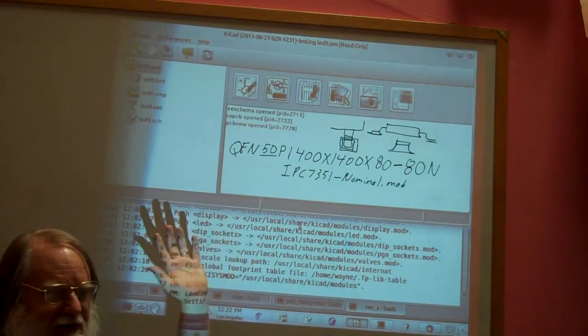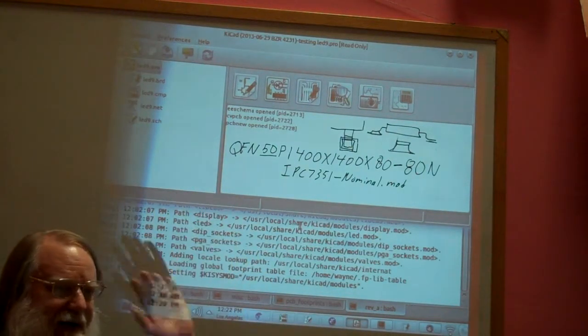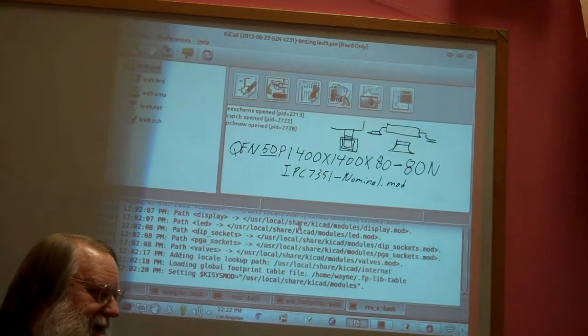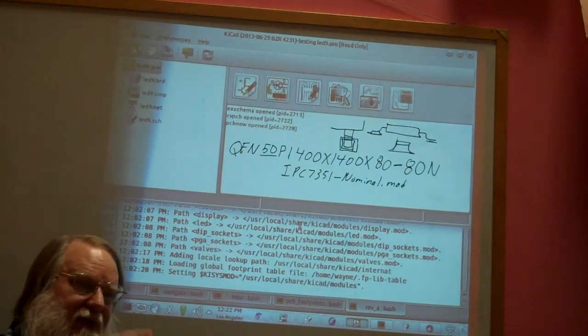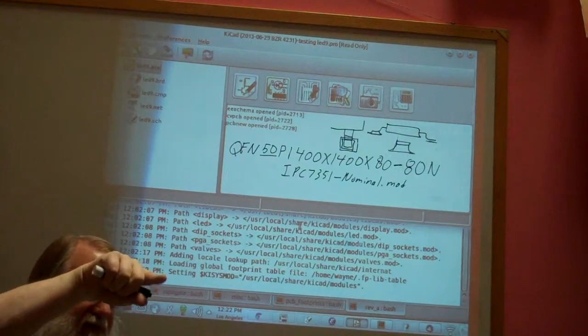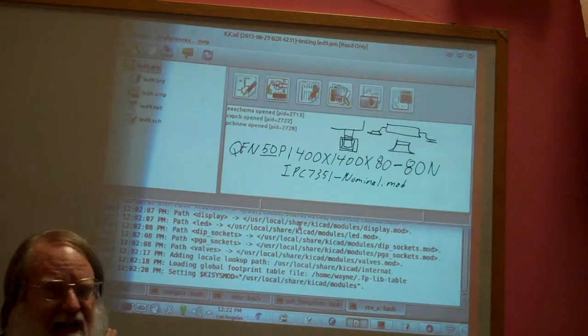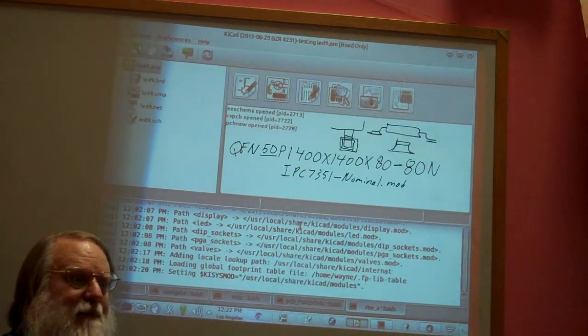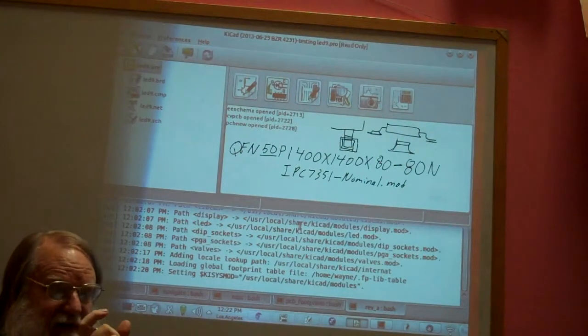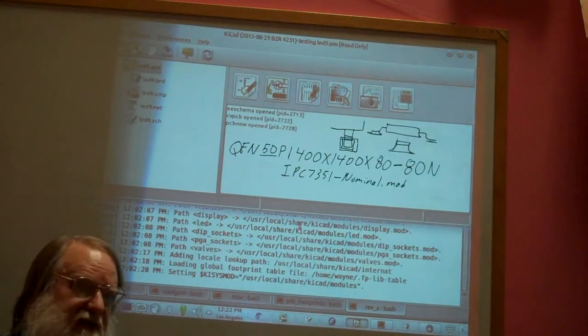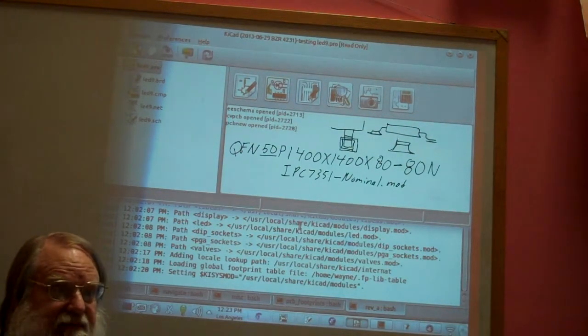J leads, no lead packages, gullwing leads, round leads. They have some parts like round. They've got them all covered. They know how big those leads should be, how big the footprint pads should be to get an acceptable level of soldering.